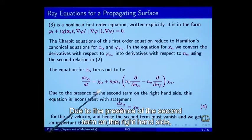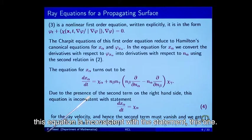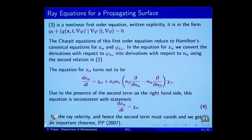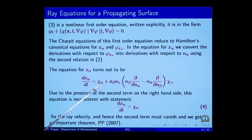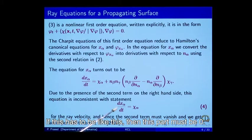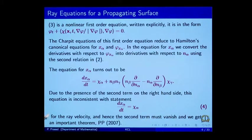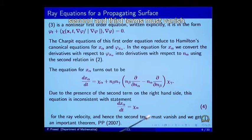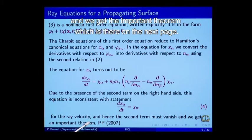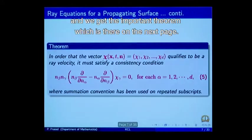Due to the presence of the second term on the right-hand side, this equation is inconsistent with the statement for ray velocity. Therefore, if the ray velocity is to be as stated, then the second and third terms must be zero. Hence, for the ray velocity, these terms must vanish and we get an important theorem on the next slide.